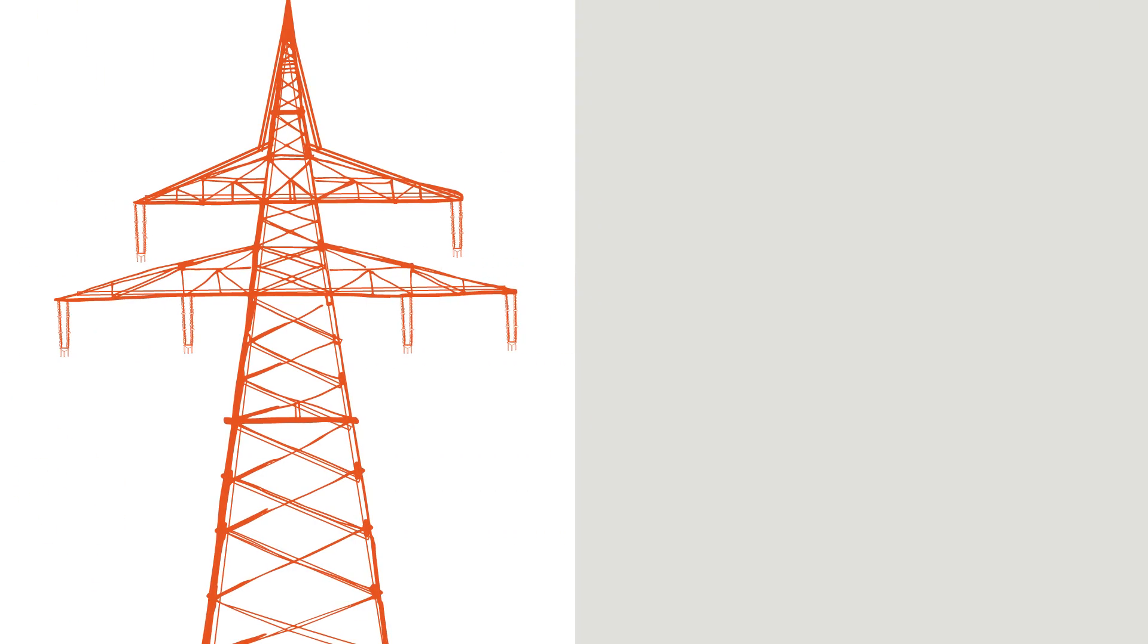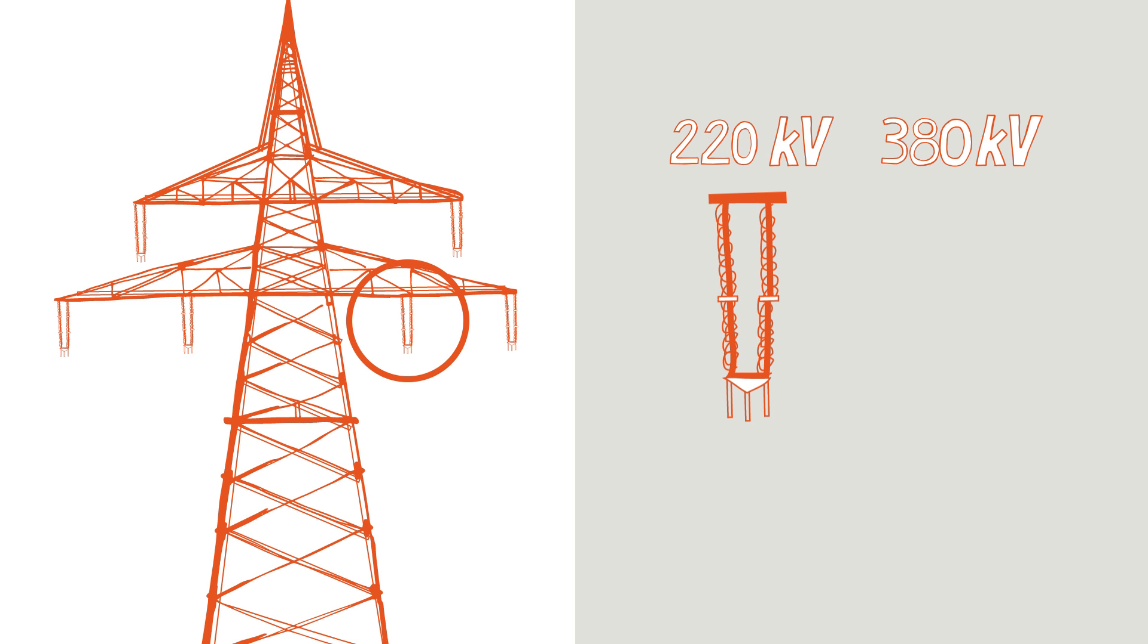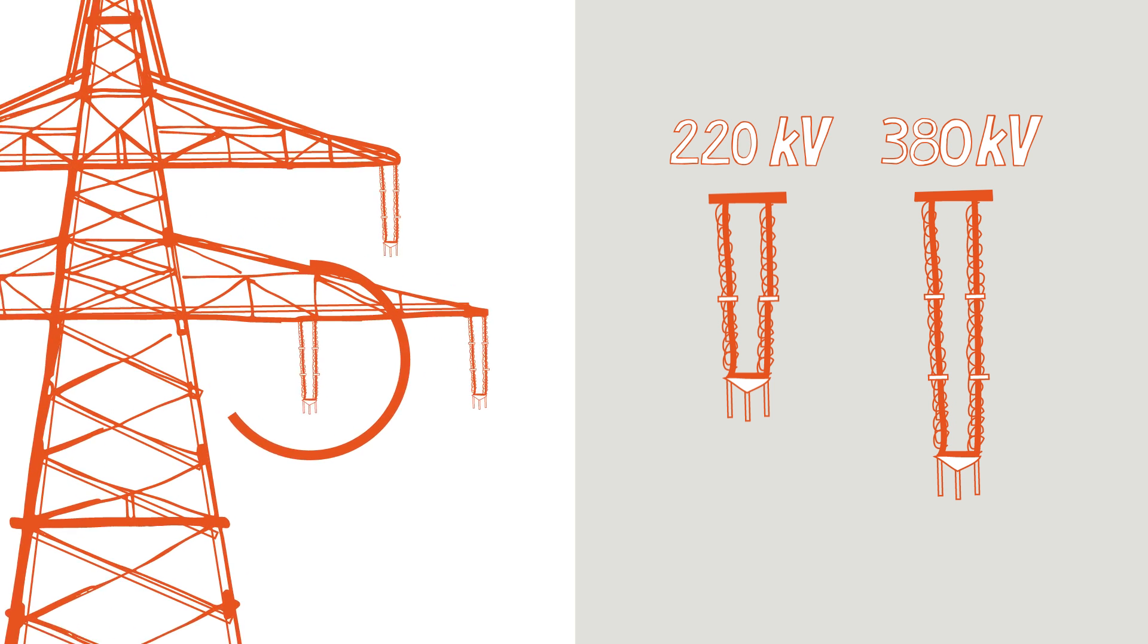Conductors have to be isolated from the earth and pylon. They are therefore fixed with isolators. Normally, the difference between 220 and 380 kilovolt lines can be pinpointed by checking the number of isolators. 220 kilovolt lines frequently have two, 380 kilovolt lines three or four isolators.